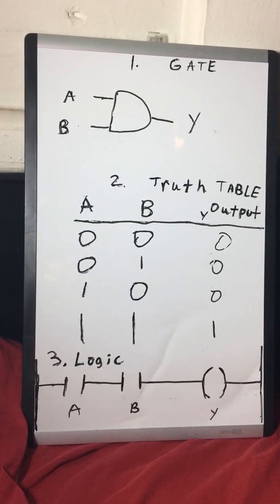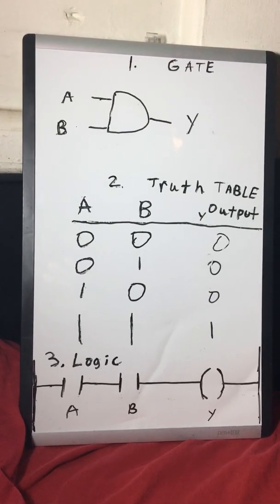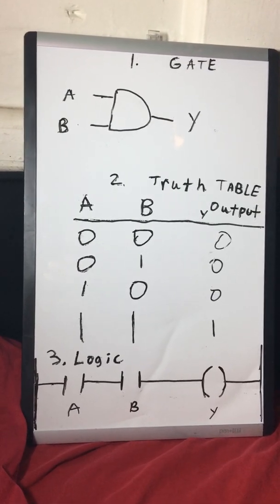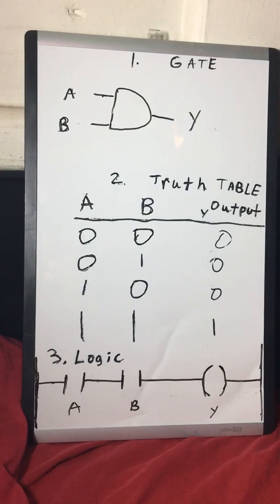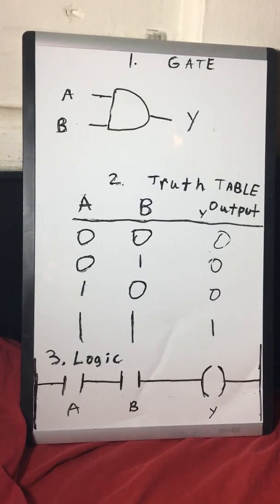If you have input A one (or high) and input B zero, you will not activate the output.